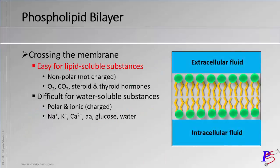Now let's discuss crossing this layer, briefly here, because in our next video we will get into more detail. It is easy for things that are lipid-soluble, or that like lipids, to cross the layer. The phospholipid bilayer is thicker in the middle, and that middle is made out of lipids. So anything made out of lipids can get through it easier. These are non-polar solutes, or things that are not charged — for example, oxygen, carbon dioxide, which are important in gas exchange in the lungs, steroid hormones such as testosterone and estrogen, and also thyroid hormones like T3 and T4.